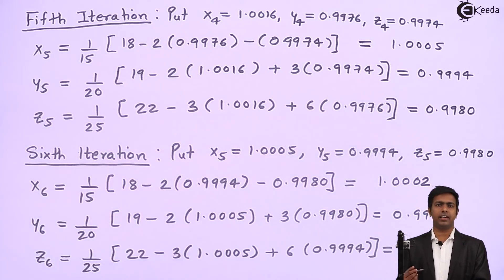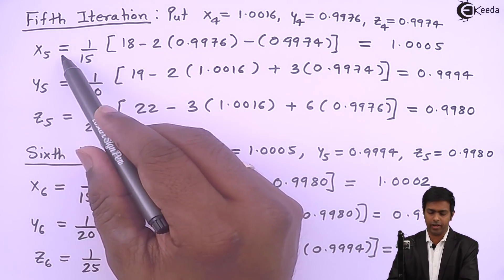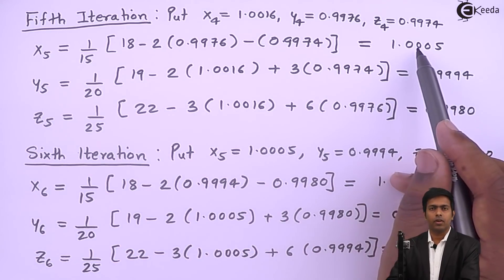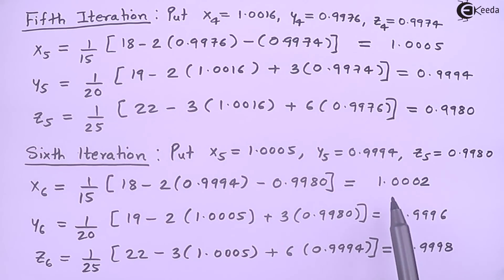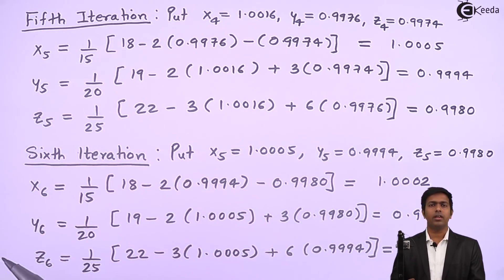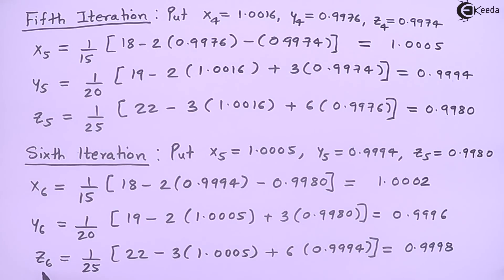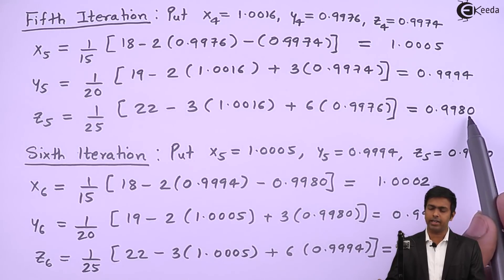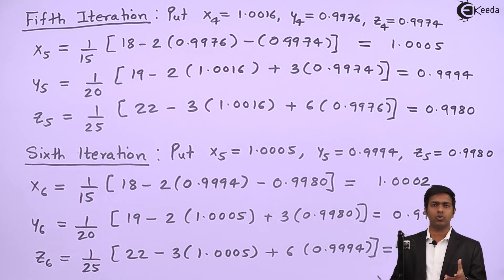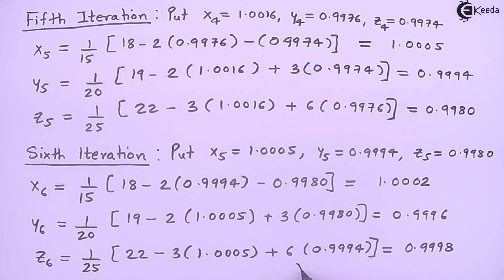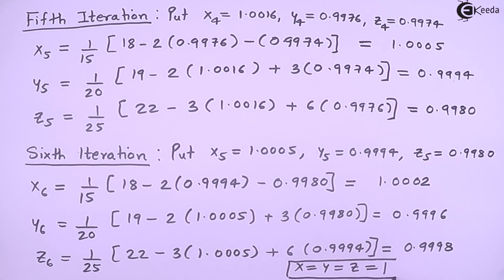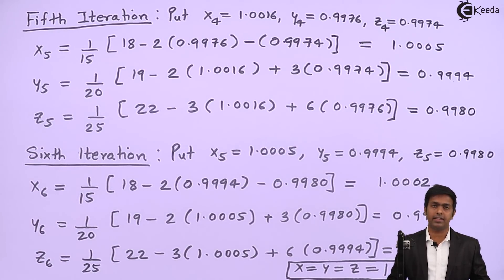Comparing the fifth and sixth iterations, we can see that x5 and x6 are going towards 1. The value of y5 is also going towards 1 — we are getting 0.9994 then 0.9996 — and similarly the value of z is going towards 1, from 0.9980 to 0.9998. In the next iteration we will get values of 1, 1, 1. Therefore x = y = z = 1 is our final answer.